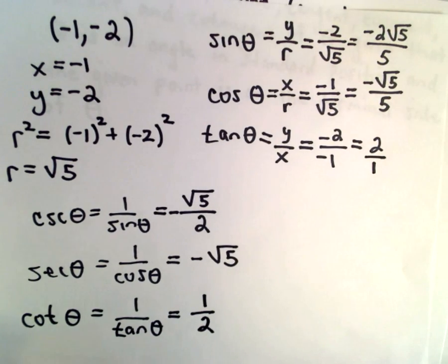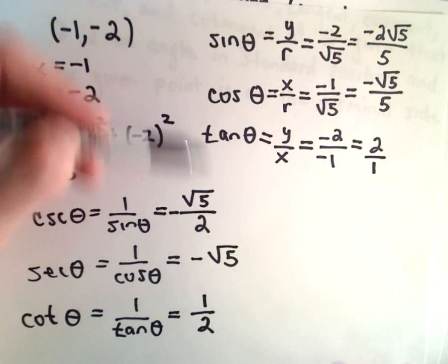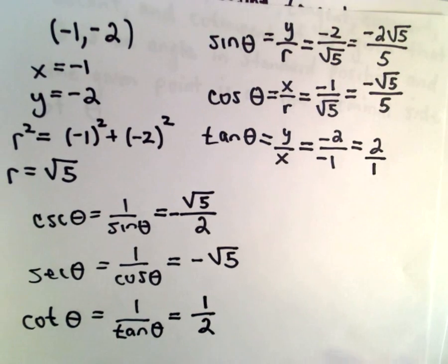And we've now got all 6 of our values. So again I always just find sine cosine tangent, and then I just take the reciprocals of those to get the other 3.